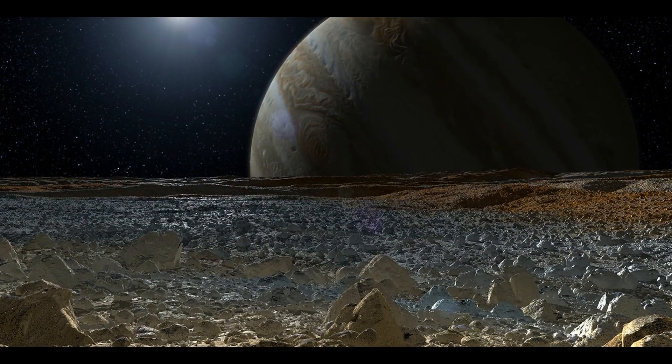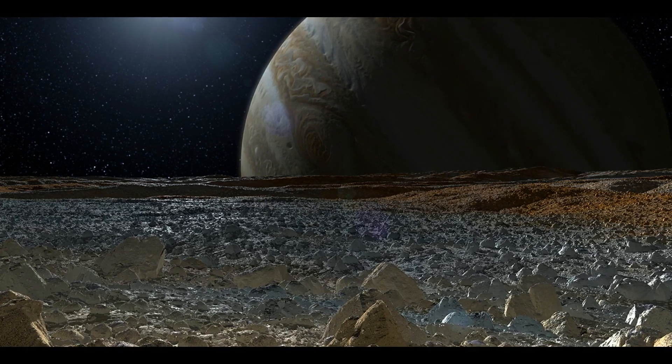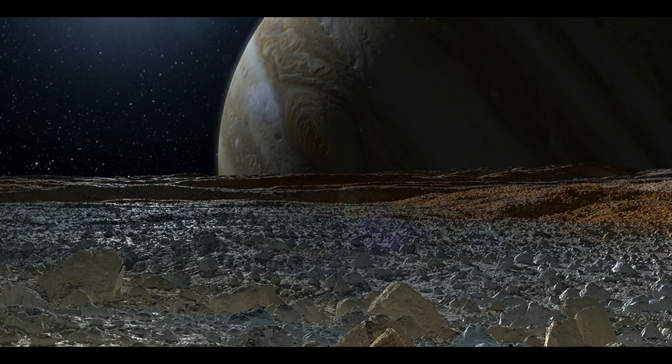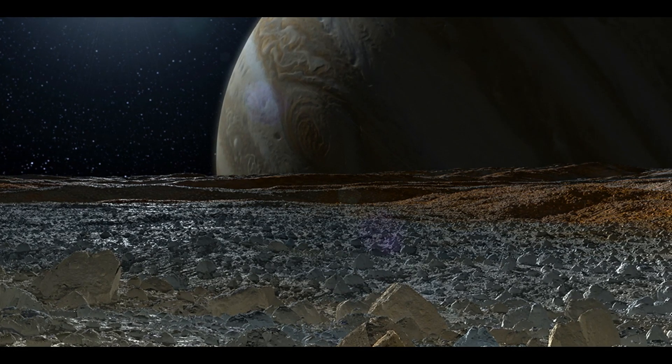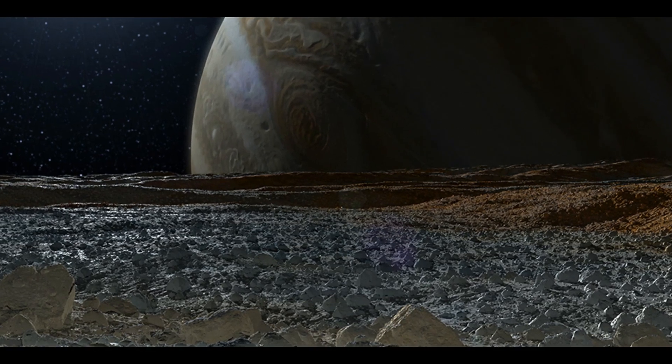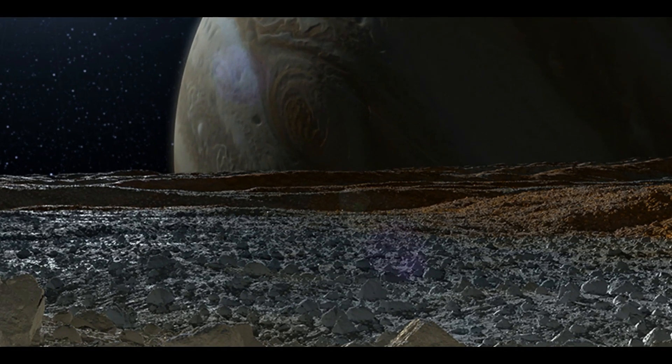Europa, the little moon to Jupiter's left in the photograph, is getting its own spacecraft. NASA's Europa Clipper spacecraft is scheduled to launch next year on a SpaceX Falcon Heavy rocket. The moon is thought to have extensive subsurface waters that could potentially support the creation of life.